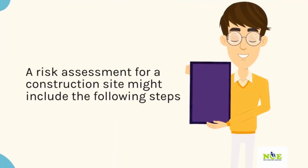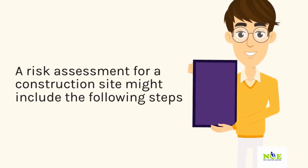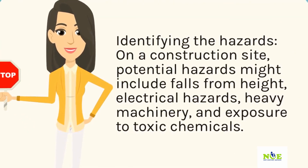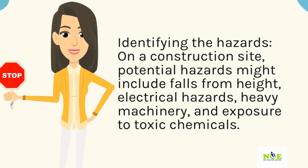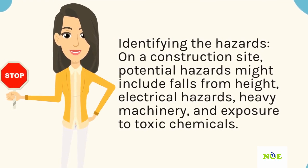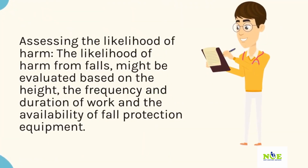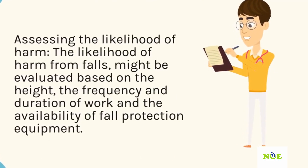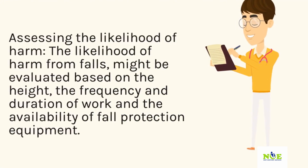A risk assessment for a construction site might include the following steps. Identifying the hazards: on a construction site, potential hazards might include falls from height, electrical hazards, heavy machinery, and exposure to toxic chemicals. Assessing the likelihood of harm: the likelihood of harm from falls might be evaluated based on the height, the frequency and duration of work, and the availability of fall protection equipment.